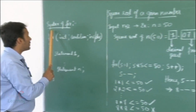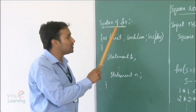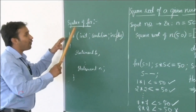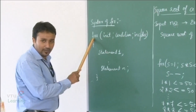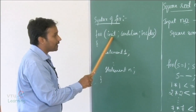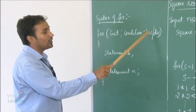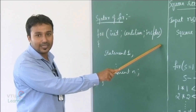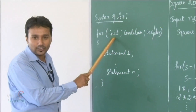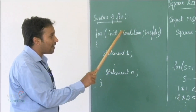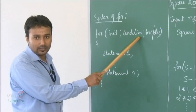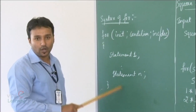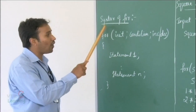Let us look into the syntax of the for loop which is used in determining the square root of a given number. The syntax is: the for keyword followed by initialization of a variable, condition, and increment or decrement using a plus or minus operator respectively. All three are separated by a semicolon, and the loop includes executable statements within its block.